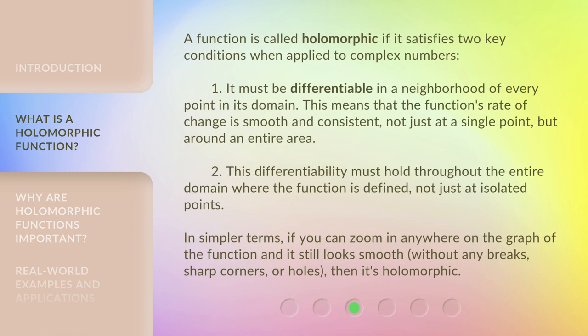A function is called holomorphic if it satisfies two key conditions when applied to complex numbers. One: it must be differentiable in a neighborhood of every point in its domain. This means that the function's rate of change is smooth and consistent, not just at a single point but around an entire area.